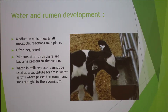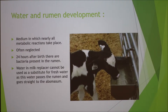Water is really important for the development of the rumen as it is the medium in which all metabolic reactions take place. It is often neglected by farmers as they think that the water in milk replacer can be used as a substitute. However, this goes straight into the abomasum and is not sufficient. 24 hours after birth there are bacteria present in the rumen, so it is vital that water is available ad-lib.